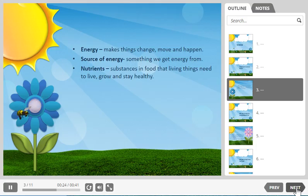Nutrients, those are substances in food that living things need to live, grow and stay healthy. So for example, your mom I'm sure tells you to eat your fruits and vegetables because they're filled with lots of nutrients. Plants get nutrients from the soil.